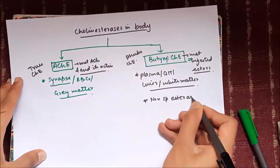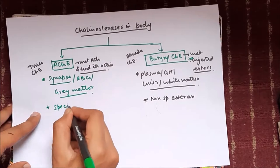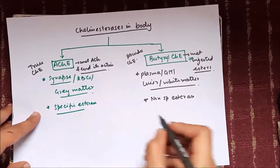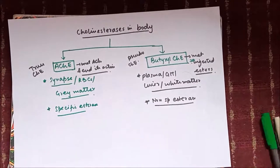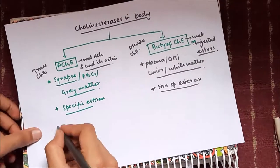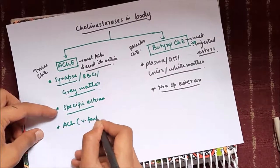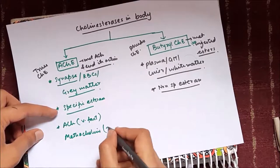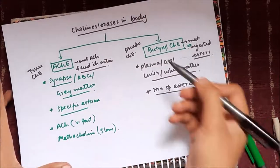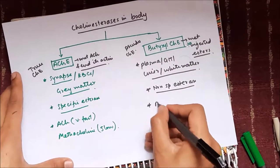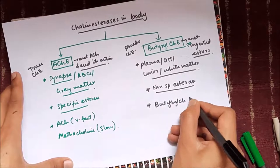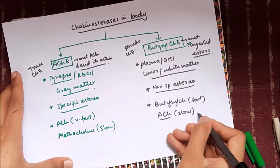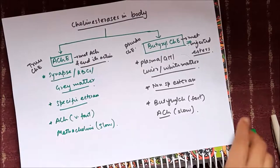Acetylcholinesterase is called true cholinesterase and is a specific type of esterase. Butyrylcholinesterase is called pseudocholinesterase and is a non-specific esterase. Acetylcholinesterase metabolizes acetylcholine very fast and can metabolize methacholine but slowly. Butyrylcholinesterase metabolizes butyrylcholine very fast and can metabolize acetylcholine slowly, but cannot metabolize methacholine.